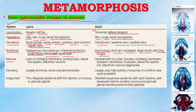In the nervous system, larvae lack a nictitating membrane, have porphyropsin, a lateral line system, and Mauthner neurons, but in the adult there is development of ocular muscles, nictitating membrane, tympanic membrane, and rhodopsin, while the lateral line system and Mauthner neurons degenerate.